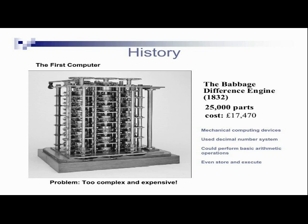We have an overview of how the computer revolution took place and how computers and electronic gadgets contribute to embedded systems. This is the first computer proposed by Charles Babbage, also called the Difference Engine, developed in 1832. It was too complex and not portable — very difficult to carry from one place to another, and it cost seventeen thousand, four hundred and seventy pounds.